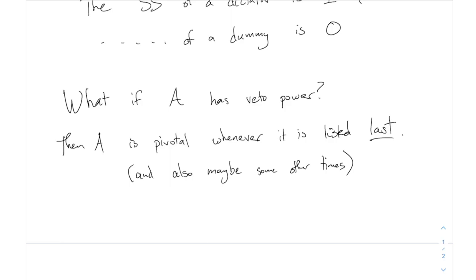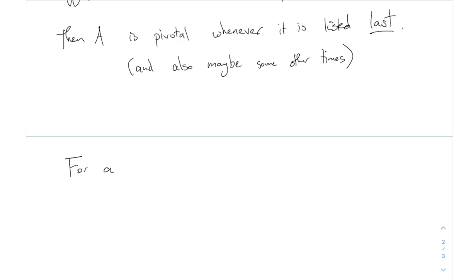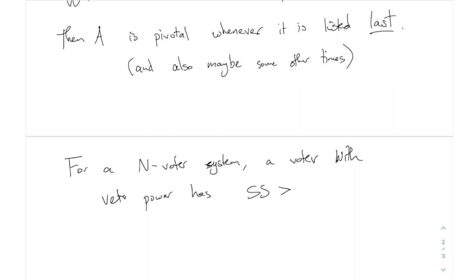You can't say exactly what the Shapley-Shubik of a veto power person is, but they are pivotal at least every time they're listed last. How often are they listed last? If there are three candidates, an individual one will be at the end one out of three times; if there are four, one out of four times. So for an n-voter system, a voter with veto power has Shapley-Shubik greater than or equal to 1/n. That's the guaranteed minimum — they might be pivotal more than that, which is why there's a greater-than-or-equal-to sign.